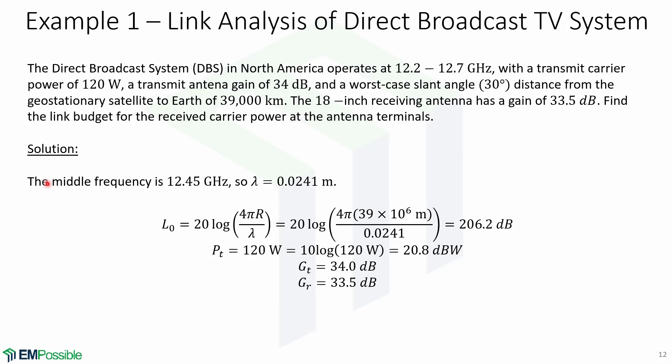Find the link budget for the received carrier power at the antenna terminals. For the solution, we'll take the middle frequency, so it will be 12.45 GHz. So now the wavelength λ equals 0.0241 meters. We'll calculate the path loss, given by 20 log(4πr/λ). We plug in the numbers, and we get 206.2 dB.